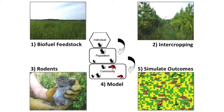Switchgrass is a native grass that can be planted in place of a native grassland. Unfortunately, previous studies have already shown that wildlife diversity is reduced when we plant switchgrass as a monoculture, compared to those native grasslands.